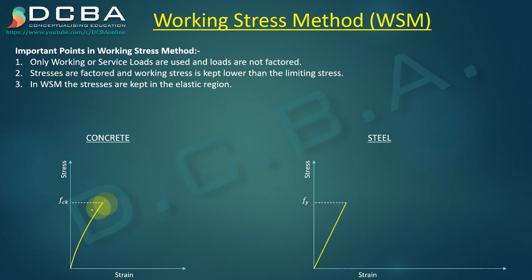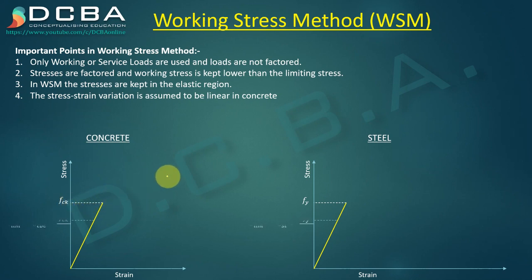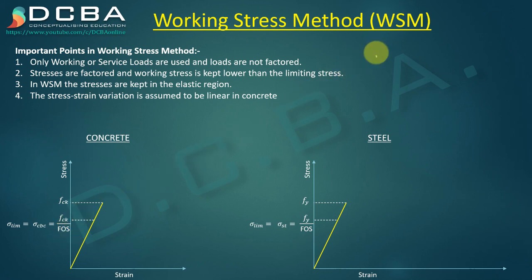The stress-strain variation is assumed to be linear in concrete. Although it is not actually linear, for Working Stress Method we assume the stress-strain characteristic is linear up to FCK. The stresses are factored: FCK divided by a factor of safety gives the limiting stress — that is, material stress divided by factor of safety equals limiting stress.